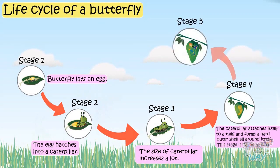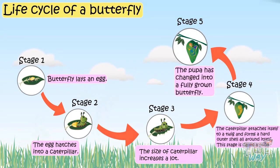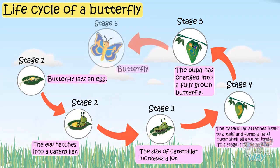Inside the pupa, the caterpillar changes into a butterfly. This hard outer shell camouflages it from predators. After spending a lot of time in this cocoon, the pupa has changed into a fully grown butterfly, which then emerges out of the cocoon. A fully grown butterfly appears and the life cycle starts all over again as the butterfly lays eggs again.